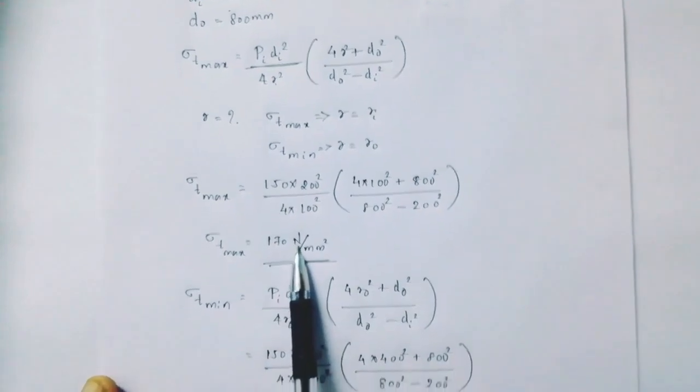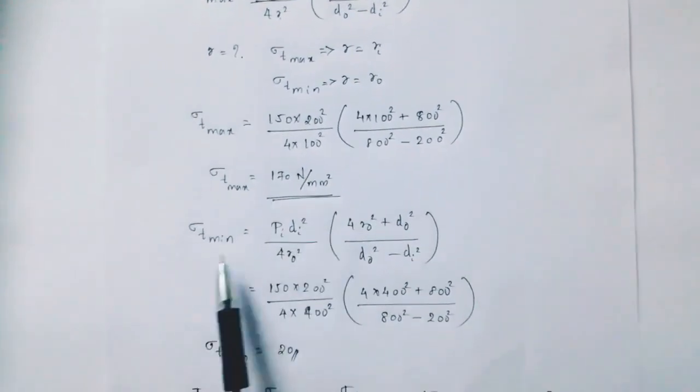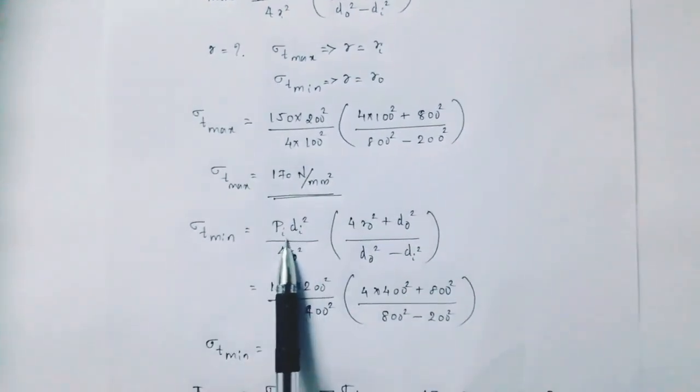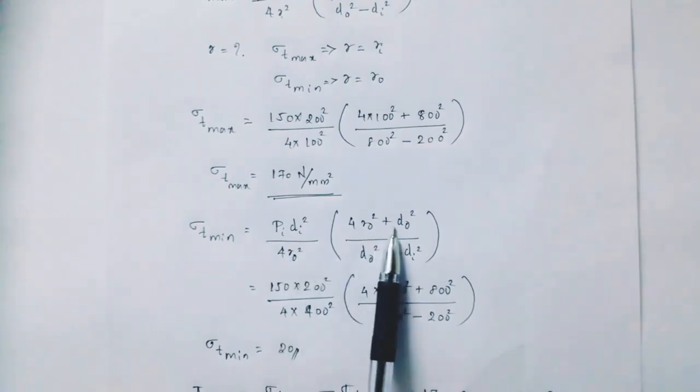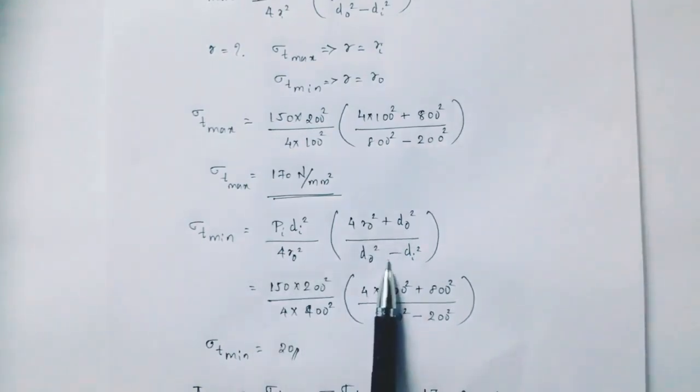Sigma T max is 170 N/m squared. For sigma T minimum, then we can substitute R to R note.